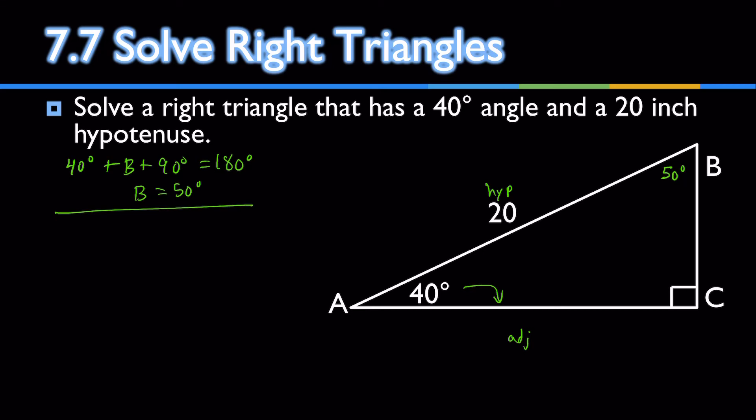Using the 40 and the 20, AC is the adjacent. I have the adjacent and hypotenuse. Adjacent and hypotenuse is? That's right, cosine. Cosine of our angle is the adjacent over the hypotenuse.